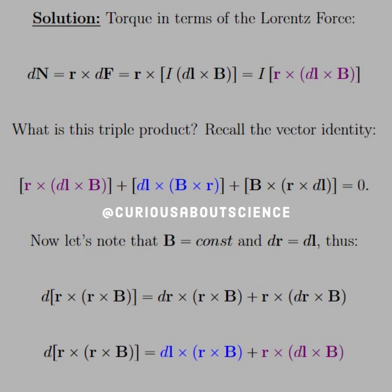All those combinations equal zero here. Since B is constant and geometrically Dr equals DL, we take the derivative of R cross R cross B. Distributing the differential via the product rule gives Dr cross R cross B plus R cross Dr cross B — the B term goes away because B is constant. Substituting DL for Dr, we have Dr cross R cross B equals DL cross R cross B plus R cross DL cross B.